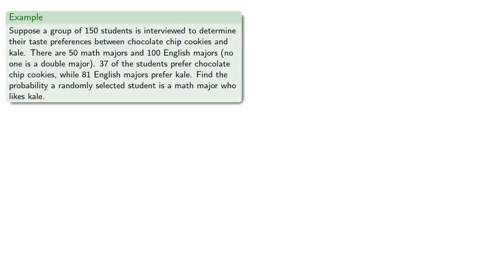For example, suppose a group of 150 students is interviewed to determine their taste preferences between chocolate chip cookies and kale. There are 50 math majors and 100 English majors. No one is a double major. Thirty-seven of the students prefer chocolate chip cookies, while 81 English majors prefer kale. Find the probability a randomly selected student is a math major who likes kale.